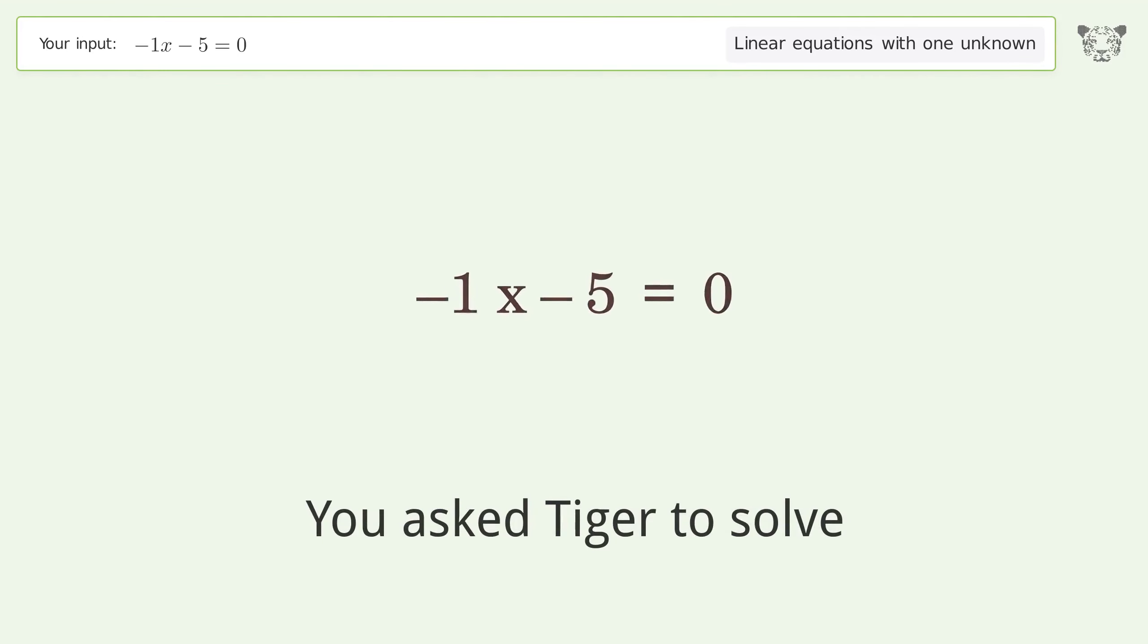You asked Tiger to solve this. It deals with linear equations with one unknown. The final result is x equals negative 5.